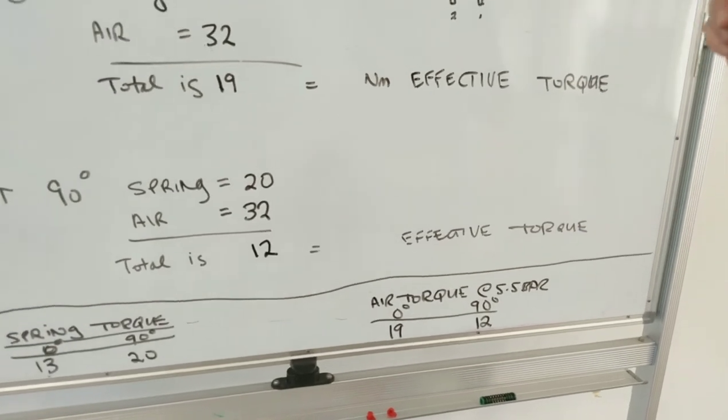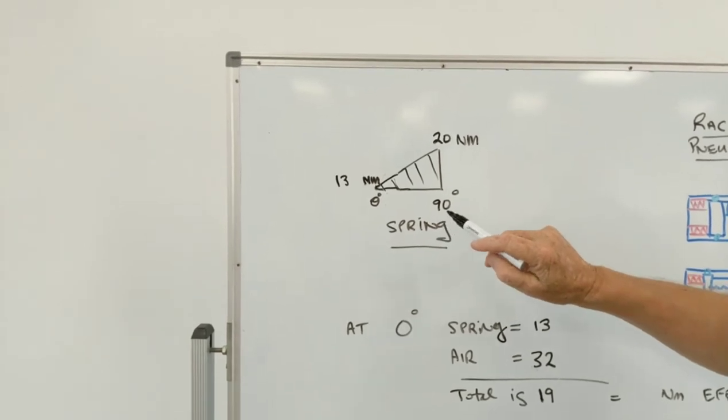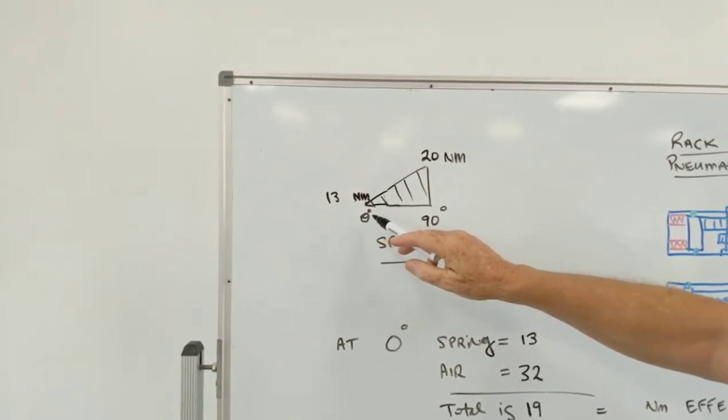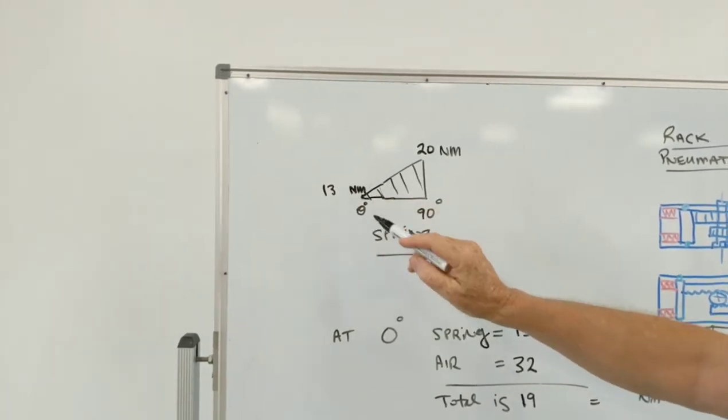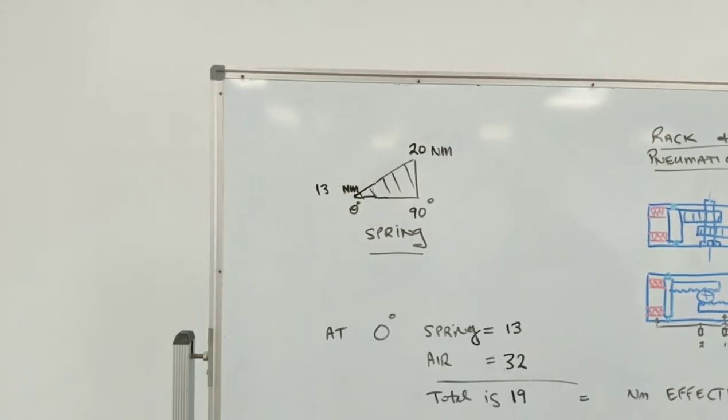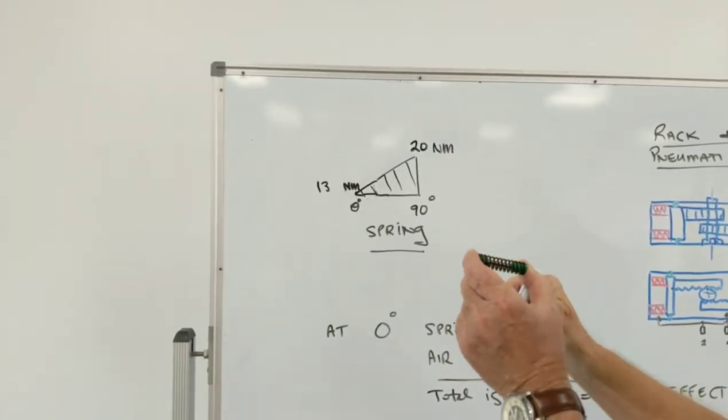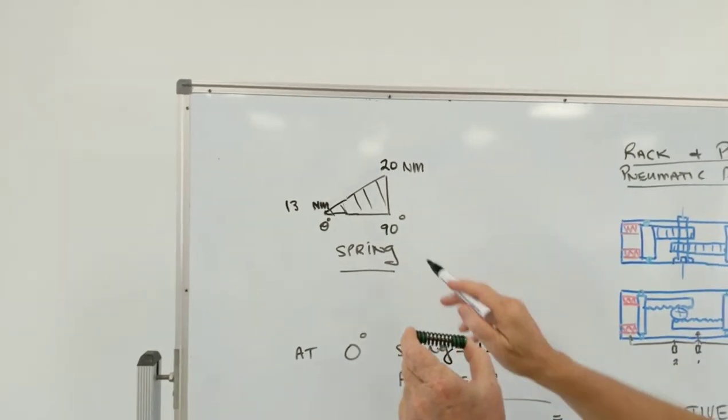So how that is brought about, when the unit is at 0 degrees, the valve is closed. Under the action of the spring we're getting 30 newton meters of compressed spring torque. The spring when it's slightly loaded up is going to give you that. When it's fully compressed it'll give 20 newton meters at 90 degrees.